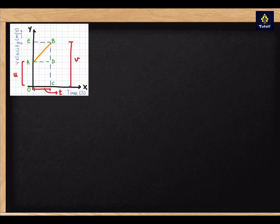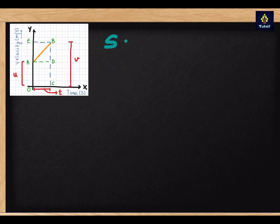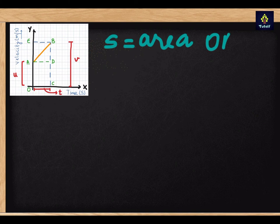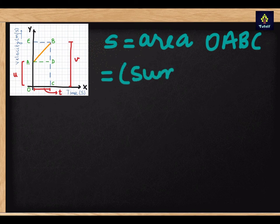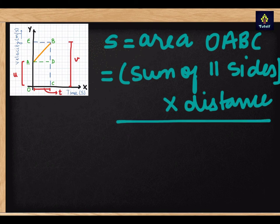So on the screen you can see the graph as well. What we will do first is we will find the area enclosed within the trapezium OABC under the graph. So that means that S is the displacement. S is the area of trapezium OABC. Now we already know that the area of a trapezium is the sum of parallel sides times the distance between the two divided by two.